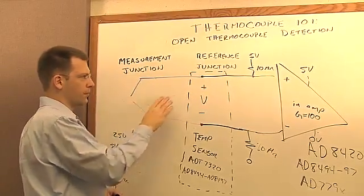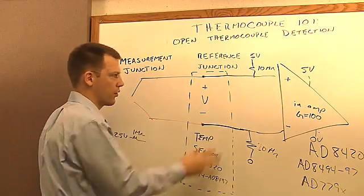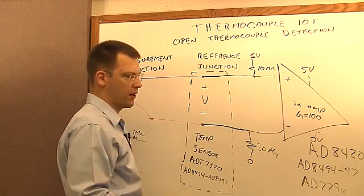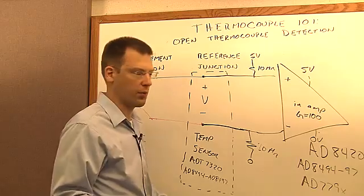So now the two inputs are going to be pulled apart. So I can get a nice big voltage on my instrumentation amplifier, and my instrumentation amplifier will rail, and I'll see that I have this open thermocouple event.